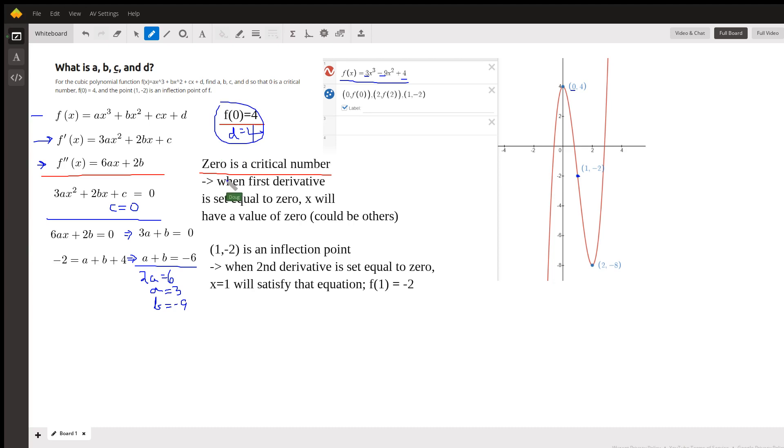0 is a critical number. That implies that when we set the first derivative to 0, x will have a value of 0. In other words, 0 is a critical number. So if I set this first derivative equal to 0, I'm saying that equals 0 when x is 0. So if I put 0's in for these x's, I get c is 0. So now I've got the values for c and d.